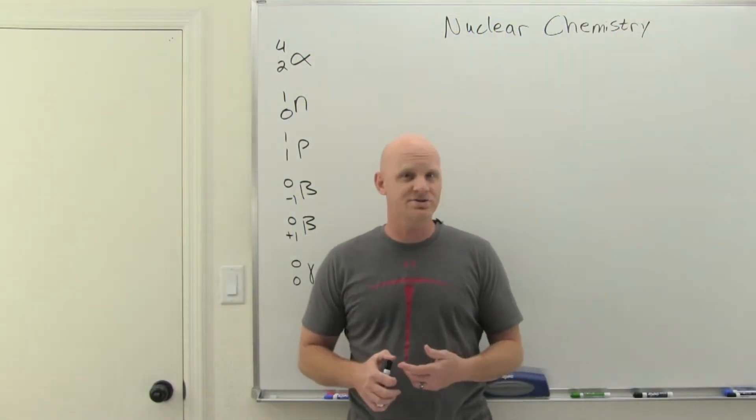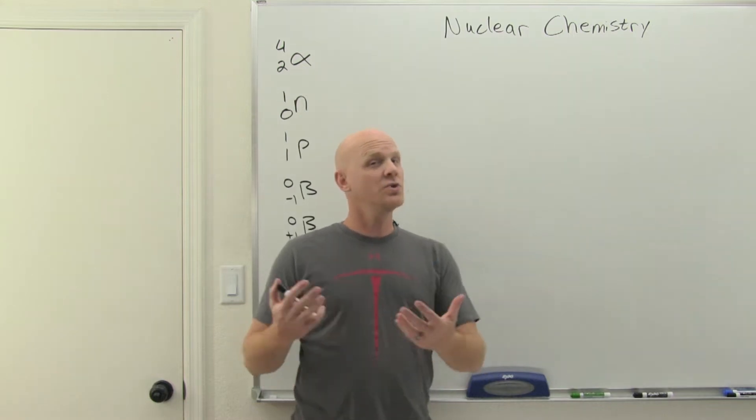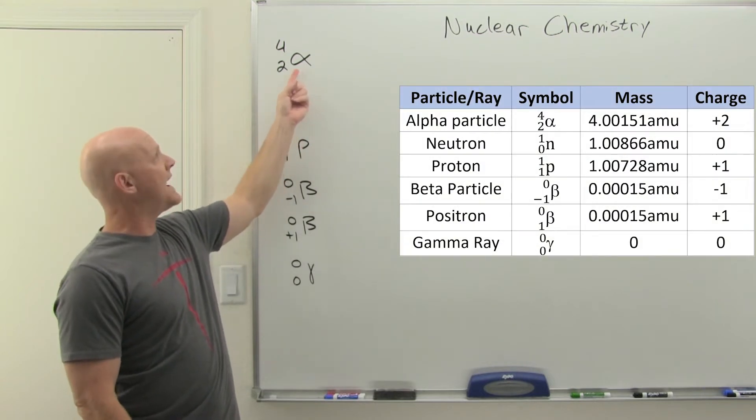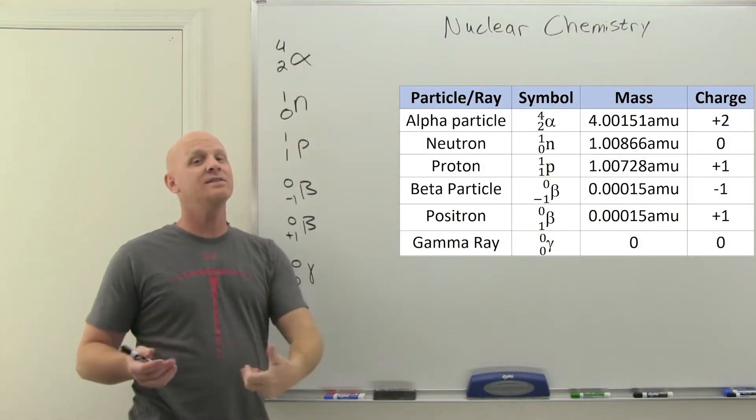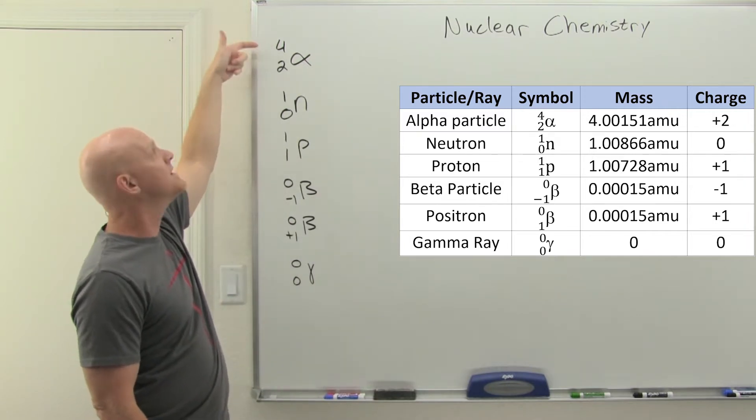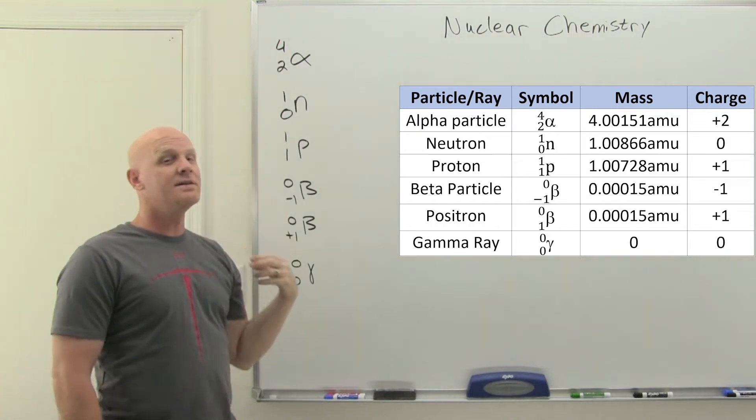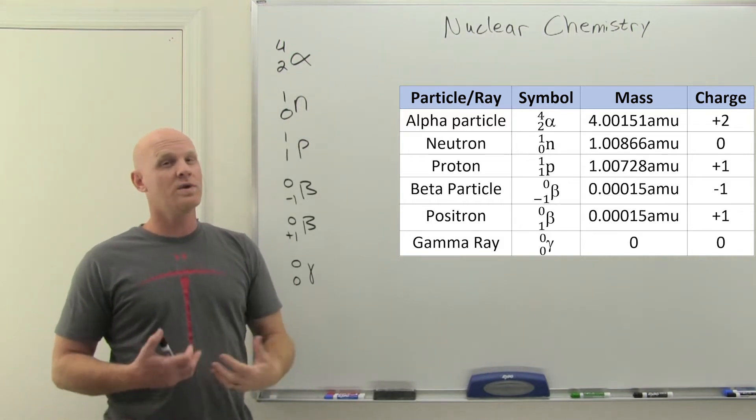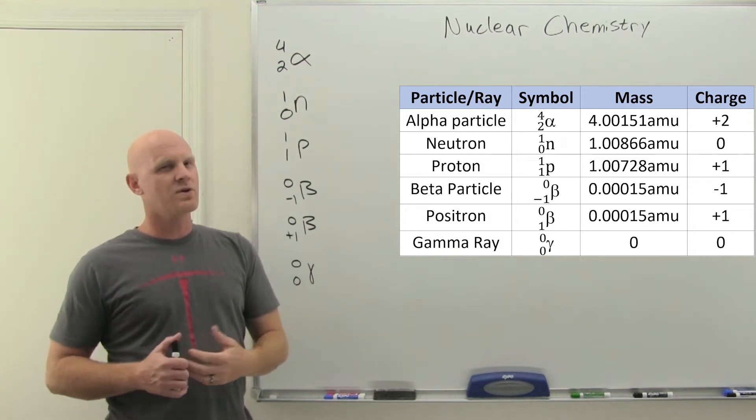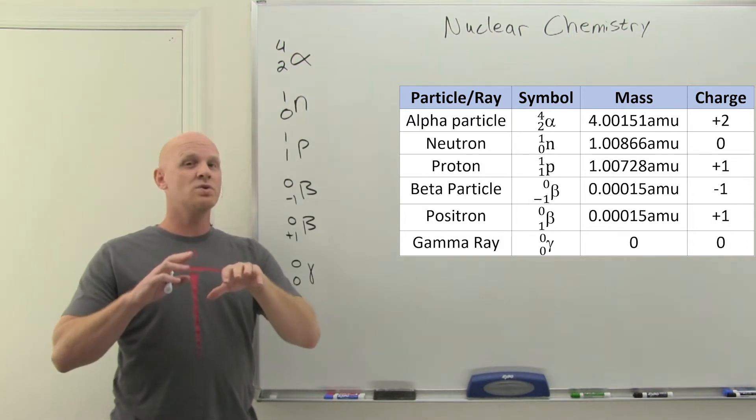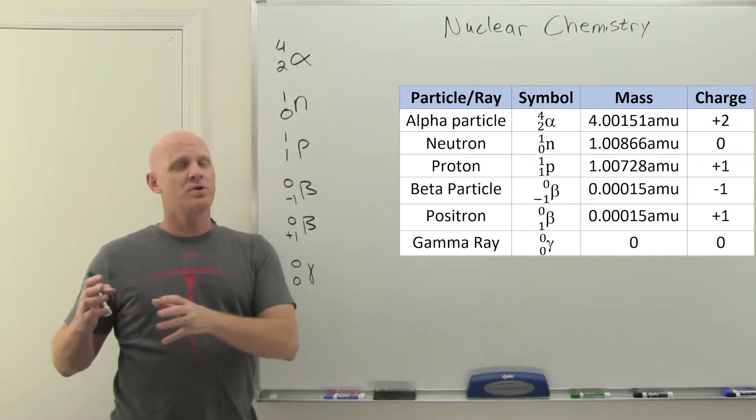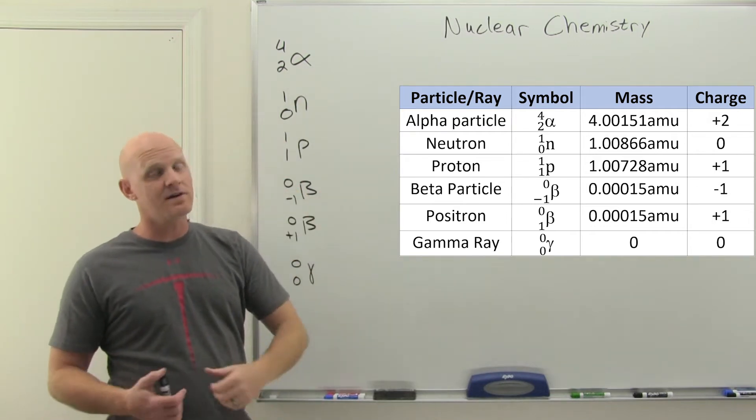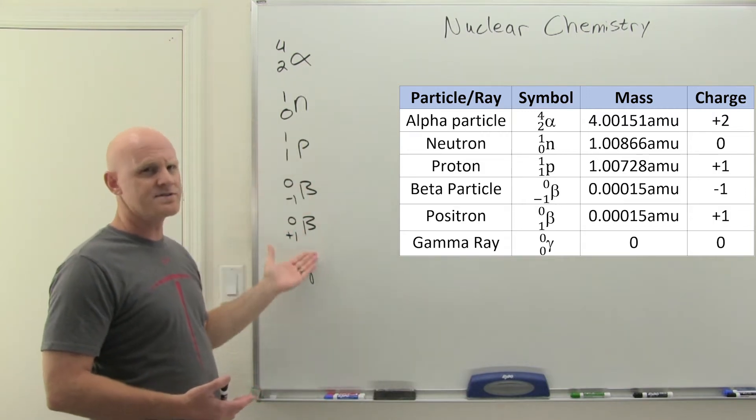Before we get into nuclear chemistry, we've got some new terminology and nuclear particles to define. Some will be familiar and some brand new. We'll start with the alpha particle. An alpha particle is the same thing as a helium nucleus. Looking at our symbols, we've got the mass number on top and the atomic number on bottom. The mass number gives you the total number of protons and neutrons. The atomic number gives you the charge on whatever particle we're talking about, and typically that corresponds to the number of protons.